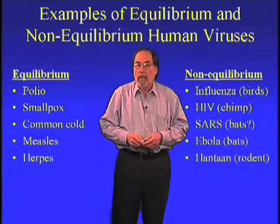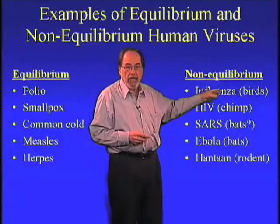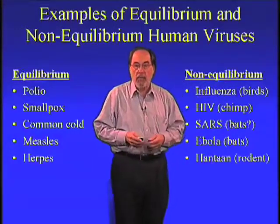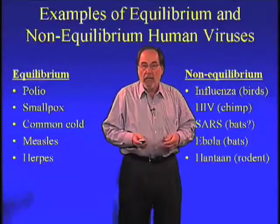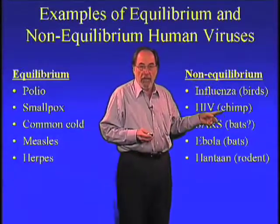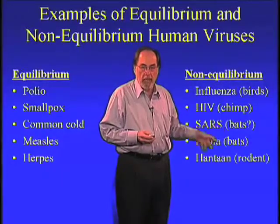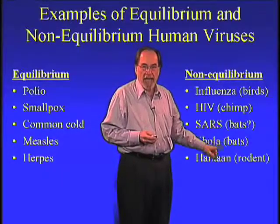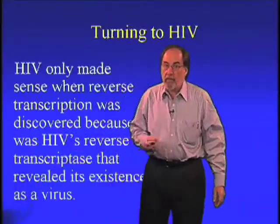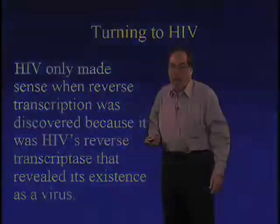Non-equilibrium viruses: flu, HIV, SARS, Ebola, Hantaan — viruses we've talked about already. Flu comes from birds, HIV comes from chimpanzees, SARS and Ebola probably both come from bats, and Hantaan virus is an equilibrium virus in rodents.